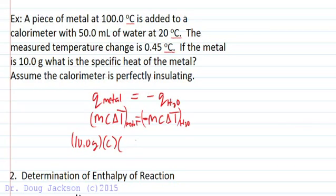That means the final temperature after addition of the metal goes from 20 degrees Celsius to 20.45 degrees Celsius. So that's the final temperature minus the initial temperature of the metal, which was 100 degrees Celsius.